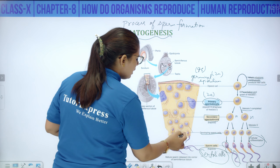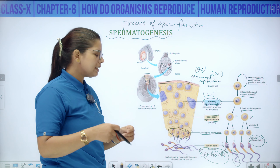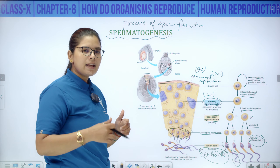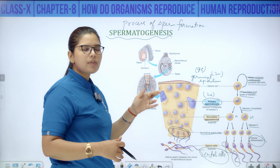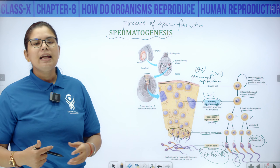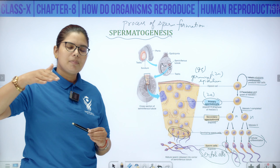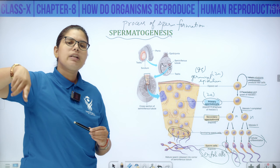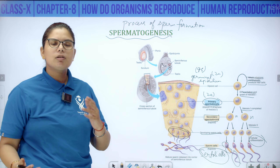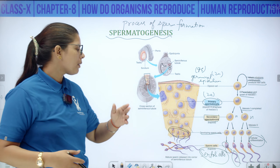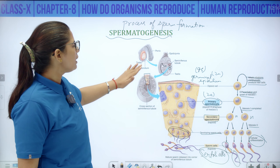The sperms are embedded in Sertoli cells for some time, receive nourishment from them — that is why they are also called nurse cells. Then sperms are released into the center of the seminiferous tubule, then go to epididymis and are nourished there too. Sperms need so much nourishment because they have to swim against gravity — the vagina is below and the fallopian tube is above — they have to move from the male body into the female body and then cause fertilization.